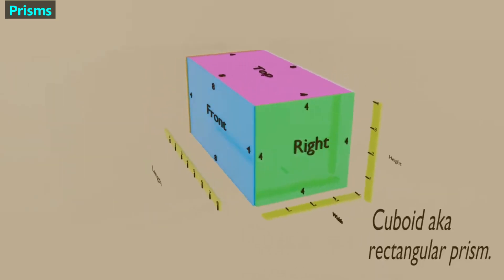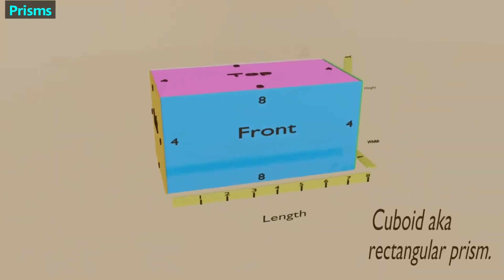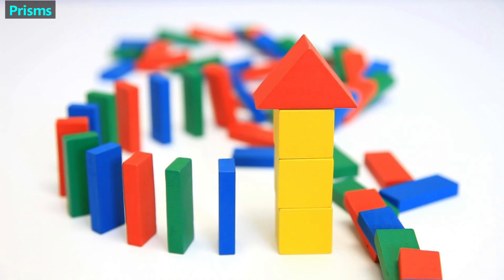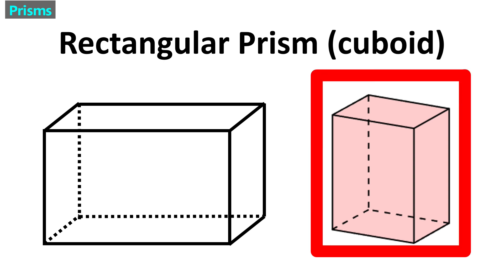This is a rectangular prism — it gets that name because both of its bases are rectangles. A common example of rectangular prisms are domino blocks. The faces between the bases are also shaped like rectangles. This is how a rectangular prism might look on a test. Sometimes we call this a cuboid. The one on the right is from a state exam question.